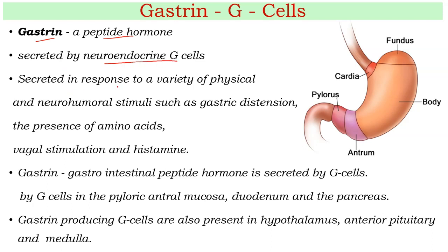Gastrin is secreted in response to a variety of physical as well as neurohumoral stimuli such as gastric distension — that means when we eat, the stomach expands. Also, the presence of amino acids in the stomach, as proteins stimulate gastrin secretion, plus vagal stimulation and histamine. When we see food, that is the neurohumoral stimulus.